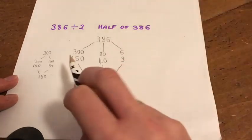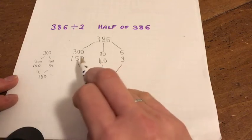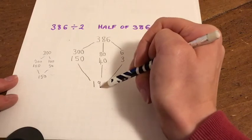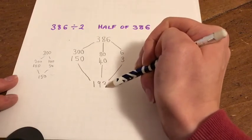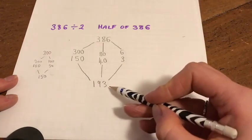So now I've got 150 and 40, which is 190, and a 3, so 193. So half of 386 is 193.